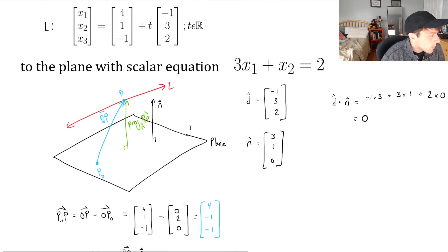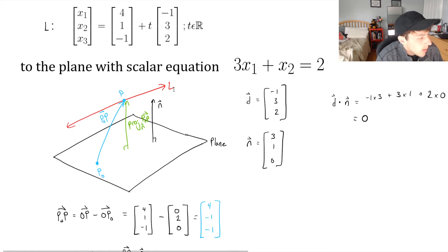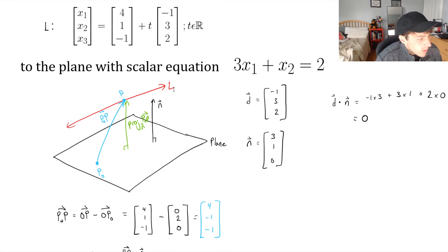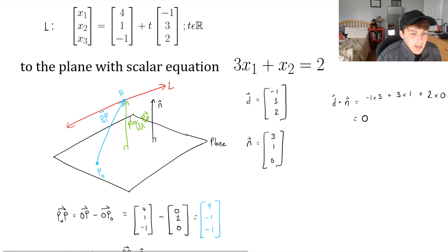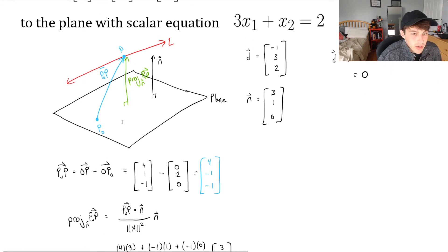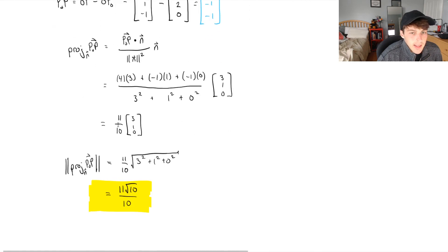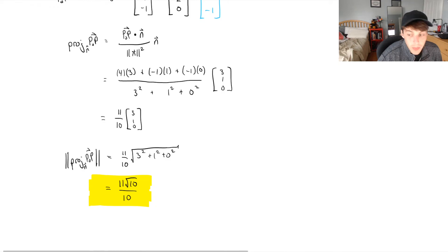To recap: we first verified the line is parallel to the plane by checking that the dot product of the line's direction vector with the plane's normal is zero. Then we found the vector from a point on the plane to a point on the line, projected it onto the normal vector, and took the norm of that projection vector to get the shortest distance. If you have any questions or this isn't clear, please leave a comment and I'd be happy to help.